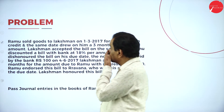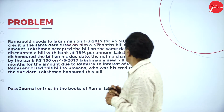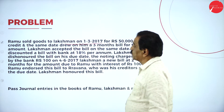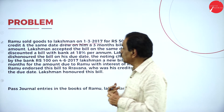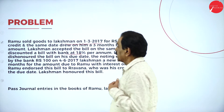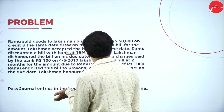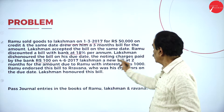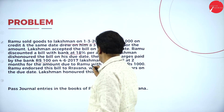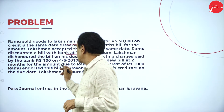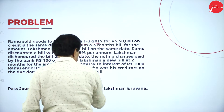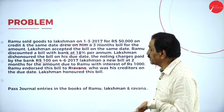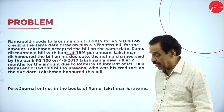Second problem. Ramu sold goods to Lakshman on 1-3-2007 for Rs. 50,000 on credit. On the same date, he drew a 3-month bill for the amount. Lakshman accepts the bill on the same date. Ramu discounts the bill with the banker at 18% per annum. Lakshman dishonors the bill on its due date. Noting charges paid by the bank are Rs. 100 on 4-6-2007. Lakshman accepts a new 2-month bill for the amount due to Ramu with interest of Rs. 1,000. Ramu endorses this bill to Ravana, who was his creditor. On the due date, Lakshman honors the bill.